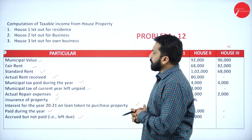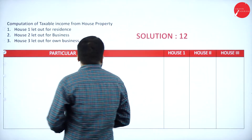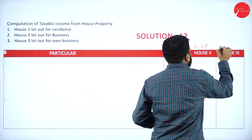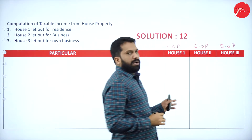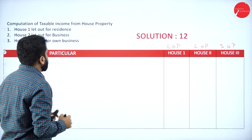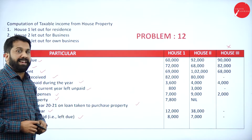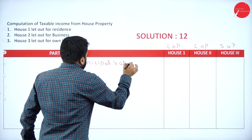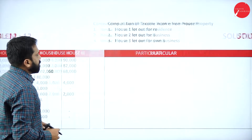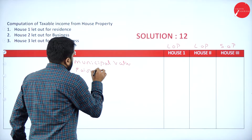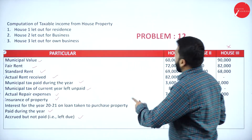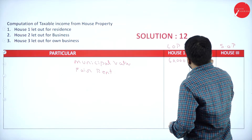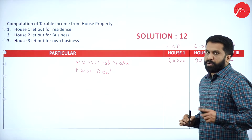Now we will go to the answer directly. House 1 is let out property, House 2 is let out property, House 3 will be self-occupied property. The first step is municipal value or fair rent — whichever is higher. Municipal value is 60,000 and 92,000 for Houses 1 and 2. Fair rent is 72,000 and 68,000. Out of municipal value and fair rent, whichever is higher: 72,000 is higher than 60,000; 92,000 is higher than 68,000.